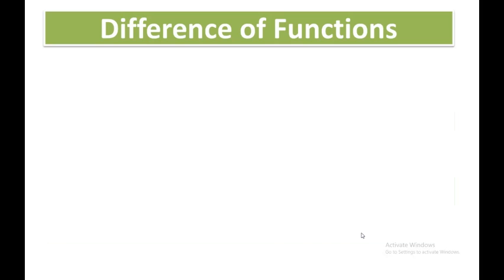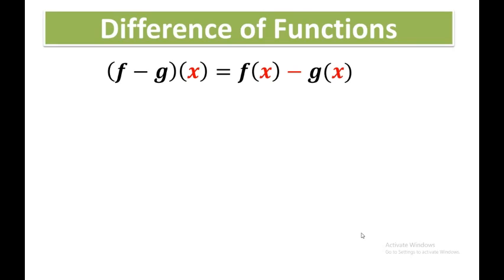Now the difference of functions. Let f and g be functions. Their difference, denoted by f minus g, is the function (f − g)(x) = f(x) − g(x). This also uses the distributive property.